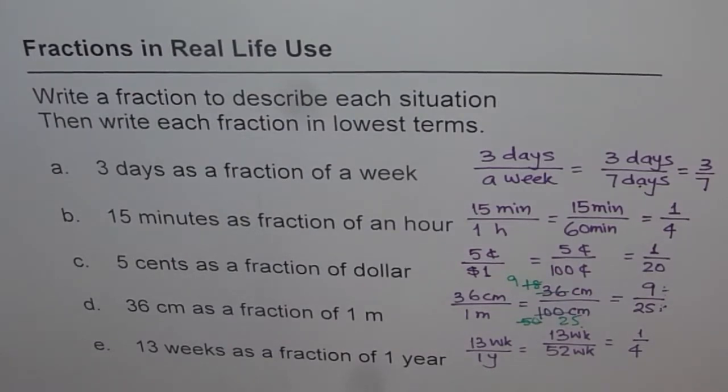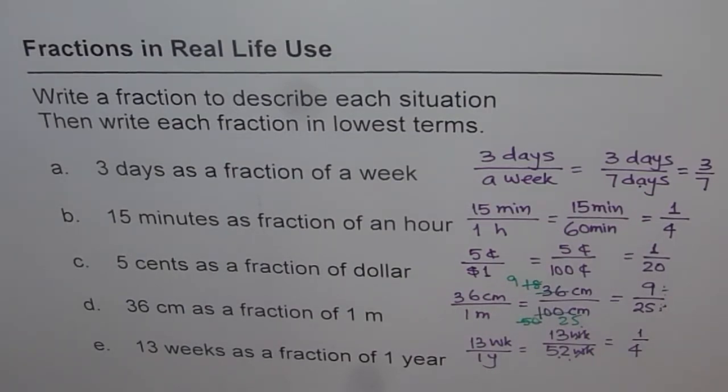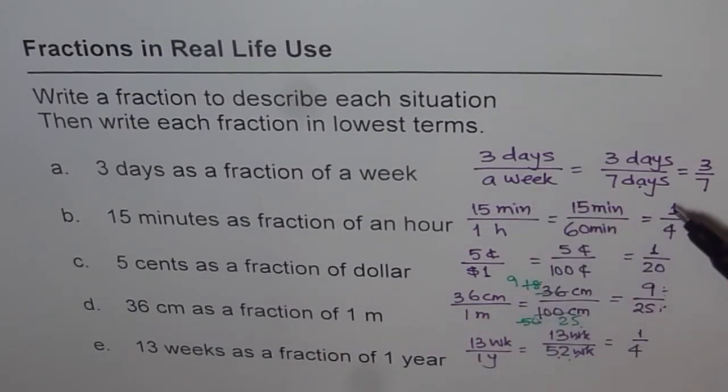And last was 13 weeks as a fraction of 1 year. I hope now you'll remember there are 52 weeks in a year, right? So 13 weeks over 52 weeks. Weeks and weeks cancel out, you get 13 over 52. Both divided by 13 gives you 1 over 4. So that is how we can answer this question. Go through this video once again and see how we wrote the fractions in first place, and then simplified them to write in as lowest terms. Thank you.